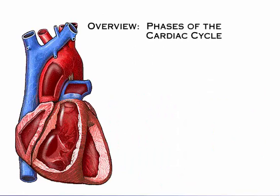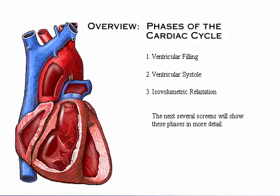The three phases of the cardiac cycle are ventricular filling, which occurs during mid to late diastole; ventricular systole, which includes isovolumetric contraction and ventricular ejection; and isovolumetric relaxation, which occurs during early diastole.